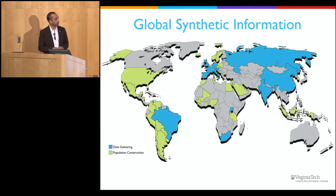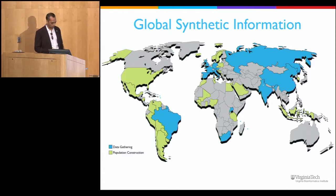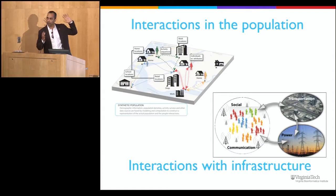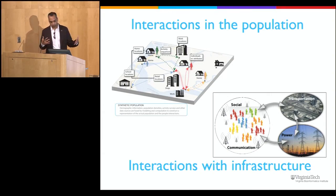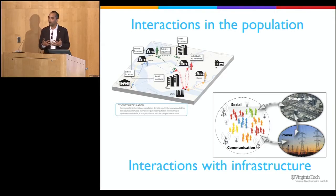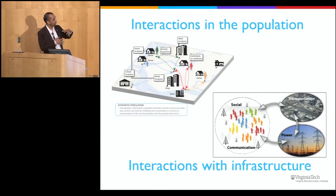What does having global synthetic information enable? It allows us to look at global problems as global problems. Beyond just demographics—the people—we have a lot of information about interactions within the population: information about the activities people do over the course of a day, geographical information about where people live, work, and go to school, how they move around during the day, and therefore who comes into contact with whom. This is information about interactions in the population—people moving around and coming into contact with each other during the course of their daily activities.